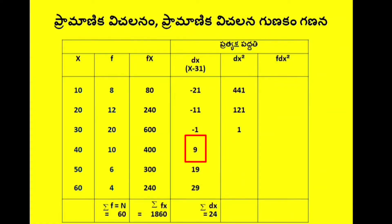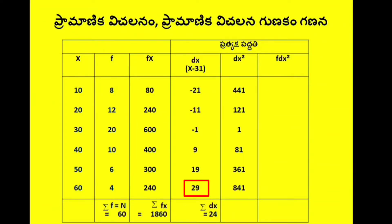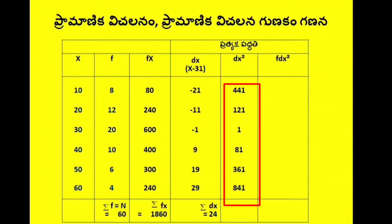9 squared equals 81, 19 squared equals 361, 29 squared equals 841. So sigma dx squared equals 441 plus 121 plus 1 plus 81 plus 361 plus 841, which equals 1846.